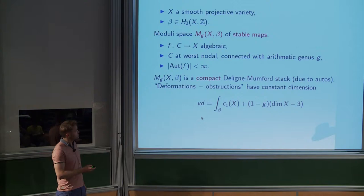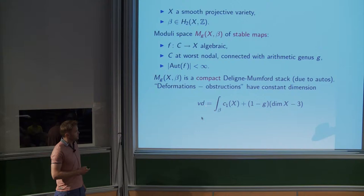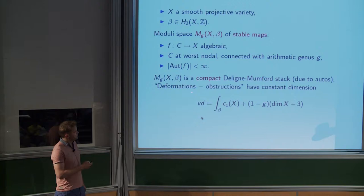If the map contracts a P1 you'd get lots of automorphisms, so you wouldn't allow that unless the P1 had lots of special points. There's a moduli space of these things — a Deligne-Mumford stack because of these finite automorphisms. The space of deformations minus the space of obstructions has a constant dimension given by a Riemann-Roch formula; this is called the virtual dimension.